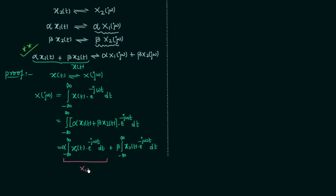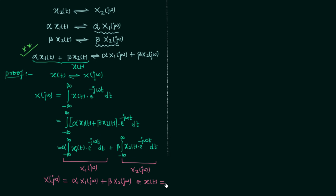We know that the integration from minus infinity to infinity of x1(t) e to the power minus jωt dt is equal to the Fourier transform of signal x1(t), which is X1(jω). Similarly, the other integral is the Fourier transform of signal x2(t), which is X2(jω). So finally, we can say that the time domain signal αx1(t) plus βx2(t) has the Fourier transform αX1(jω) plus βX2(jω), and in this way we have proved the linearity property of the Fourier transform.